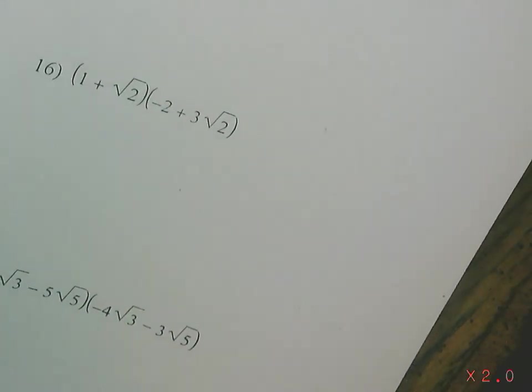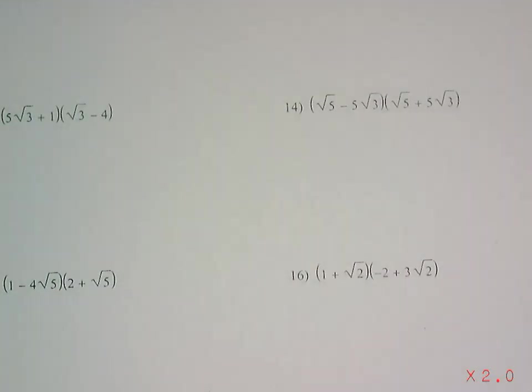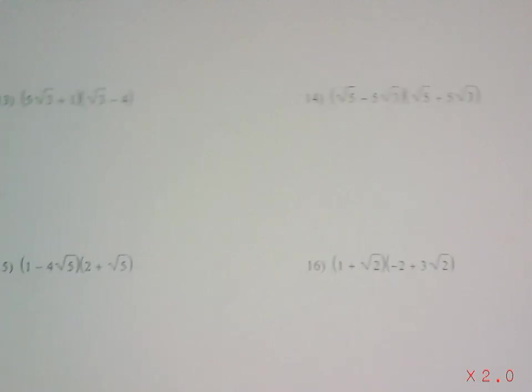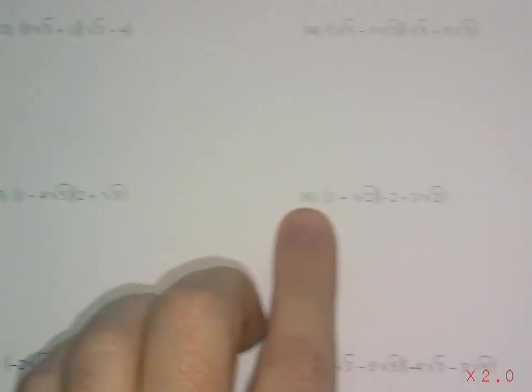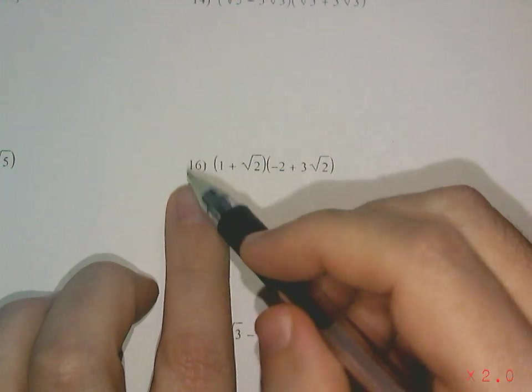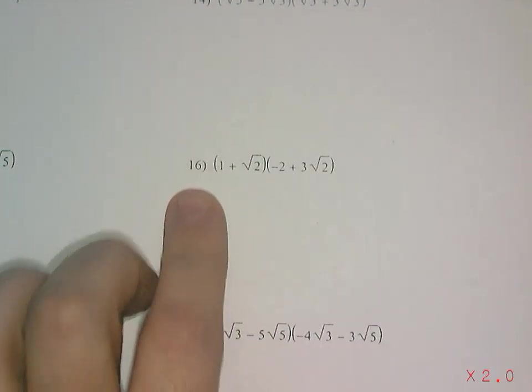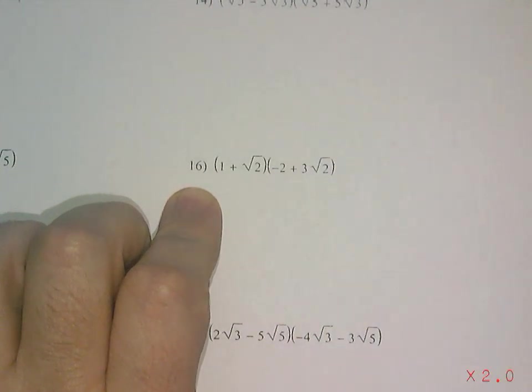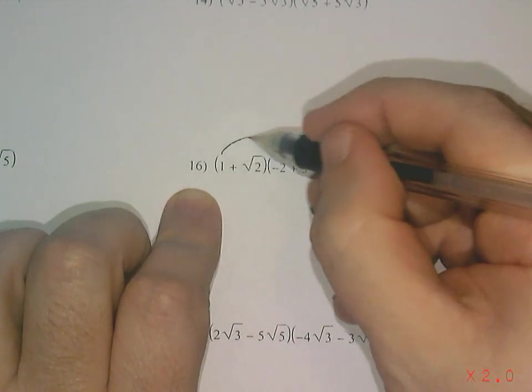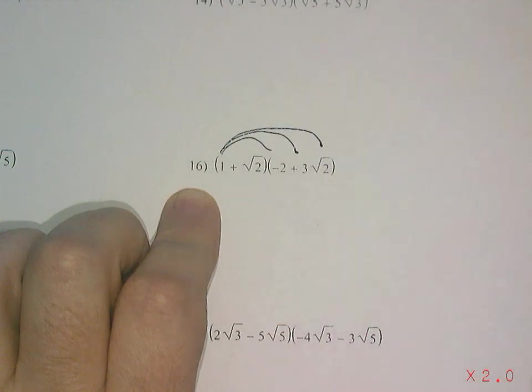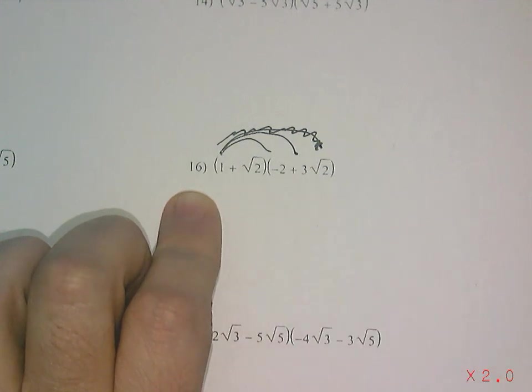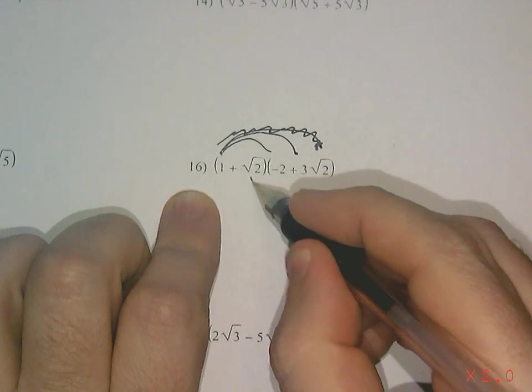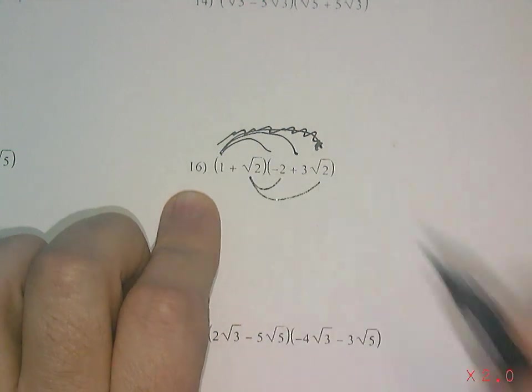That's really all you're doing today. Let's do one of these - they're kind of like a quadratic. Let's do number 16. Just like when we were distributing the binomials, each number distributes to each number in the other parentheses. So this 1 is going to distribute to the negative 2 and the 3 square root of 2, and that square root of 2 is going to distribute to the negative 2 and the 3 square root of 2.